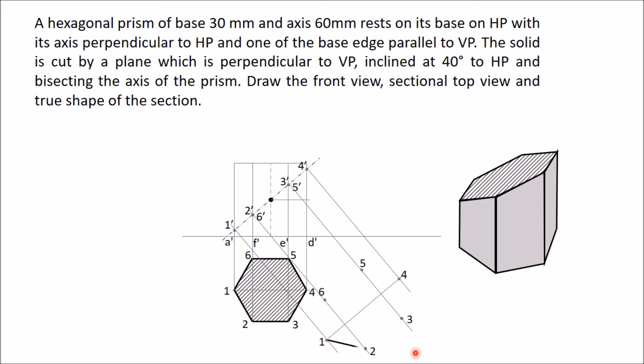In this way, you got all the points. Now join all these points using thick lines. Now this is the true shape of the section. Now provide hatching lines. And in front view, all the visible lines should be drawn thick. So I have drawn this thick line. And this is the required front view, top view, sectional top view, and true shape of the section.